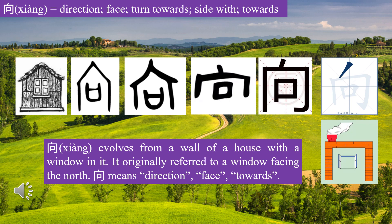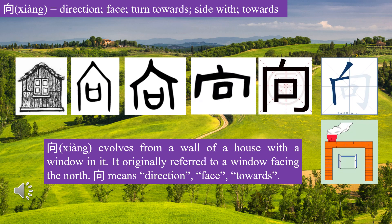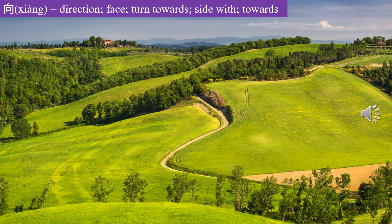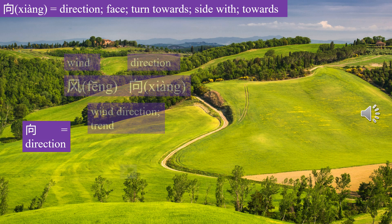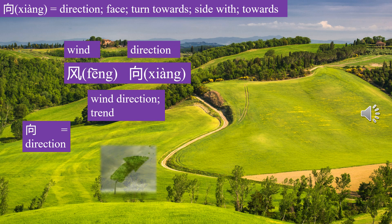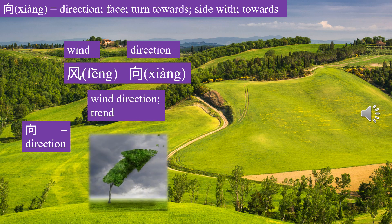Let's learn characters in word groups and sentences. 向 (Xiàng) means direction, face, towards. 方向 (fāngxiàng) means direction. 风向 (fēngxiàng) means wind direction.